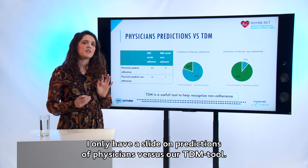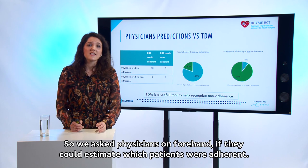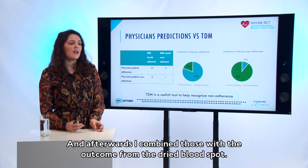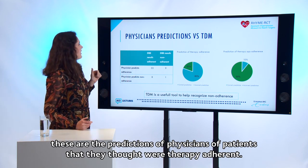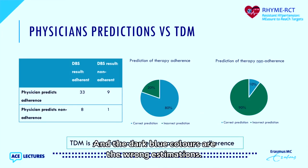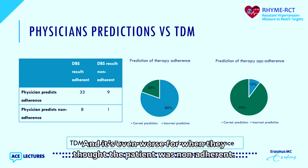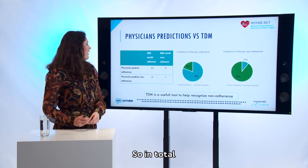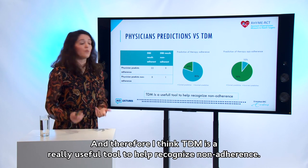We asked physicians to estimate which patients were adherent or non-adherent, then compared with our dried blood spot outcomes. As you can see, in 20% of cases when the physician thought the patient was adherent, the patient was actually non-adherent. And it was even worse for when they thought the patient was non-adherent — they were actually adherent. In total, almost one third of patients were wrongly identified. Therefore, I think TDM is a really useful tool to help recognize non-adherence.